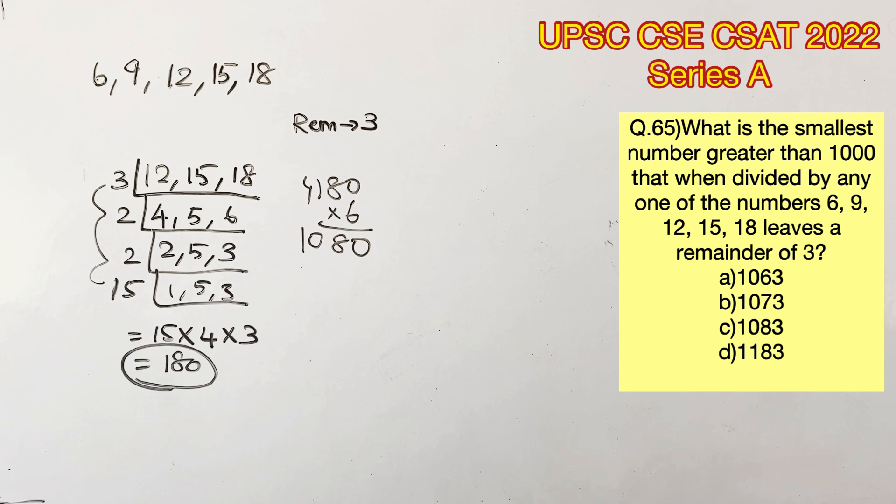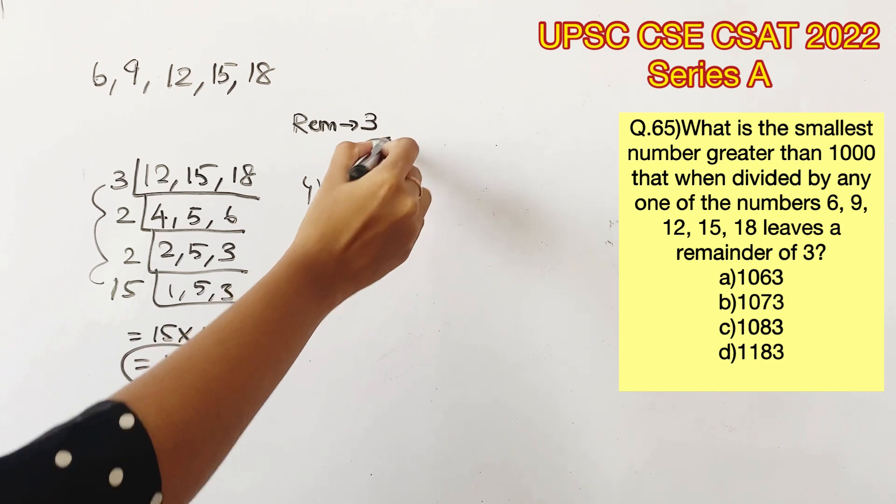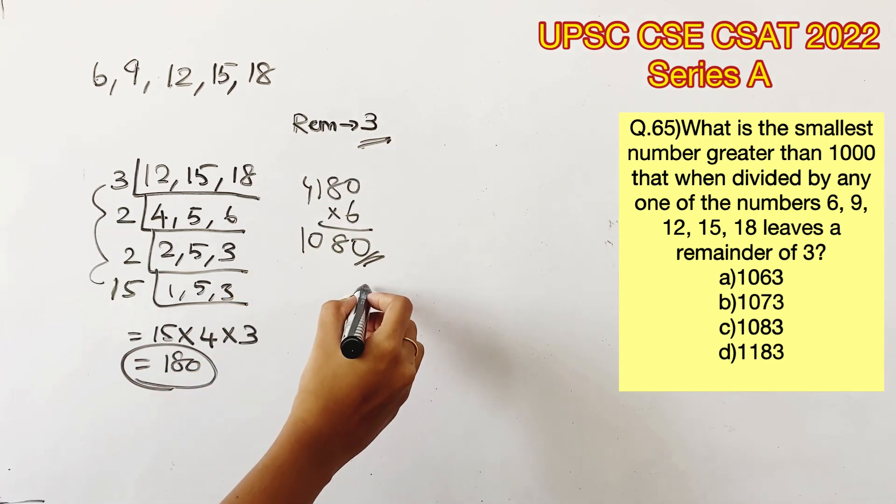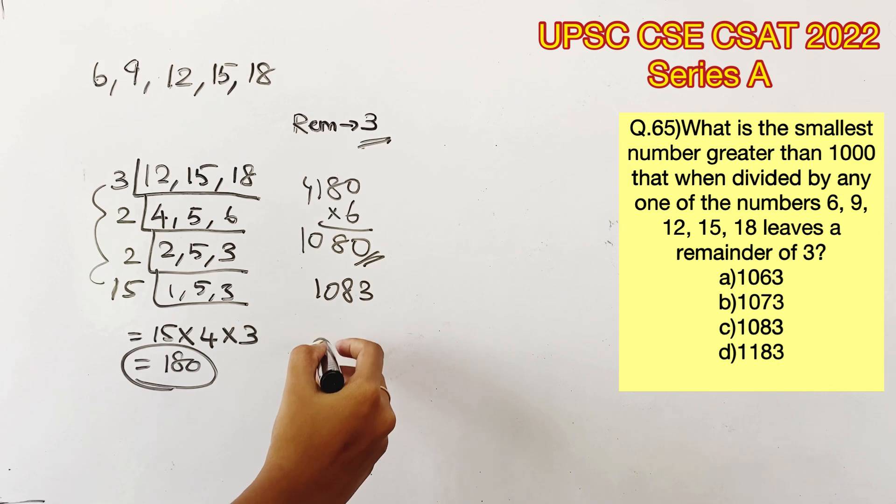But they have asked for a number which leaves a remainder of 3. So all we have to do is add this remainder with the answer that we got, which will become 1083. Therefore, option C is the right answer.